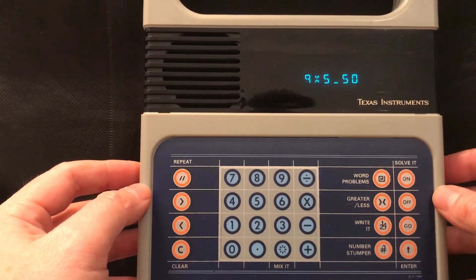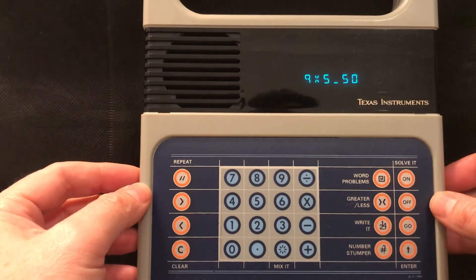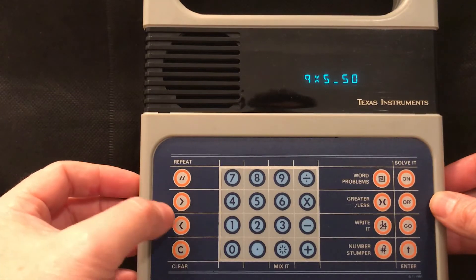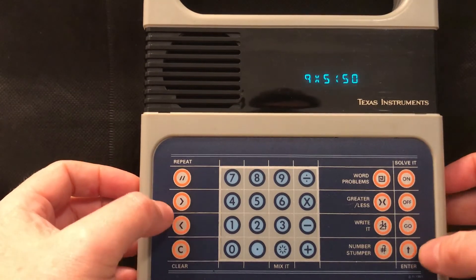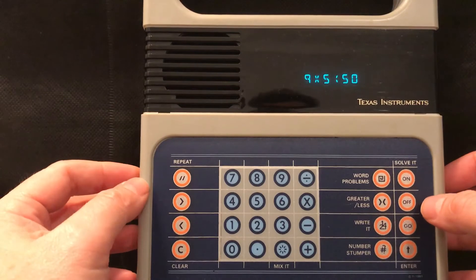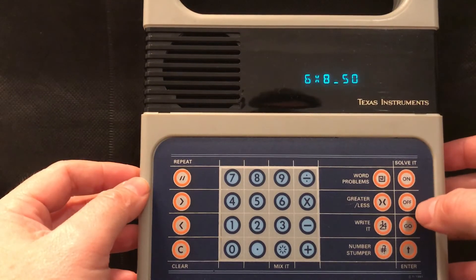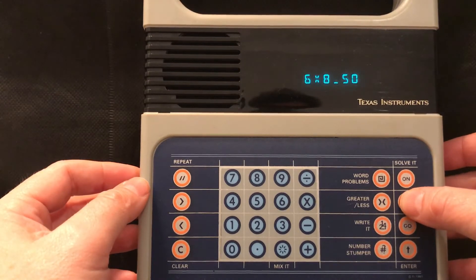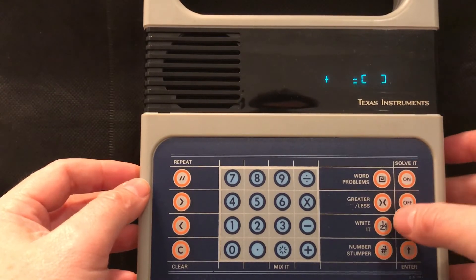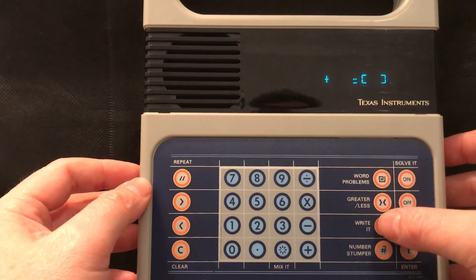That's right. Nine times five is greater than or less than fifty. Well we know that's forty five so that's less than fifty. That's correct. Six times eight is greater than or less than fifty. Let's just stop it there as we haven't got all night. So the next game is Write It.